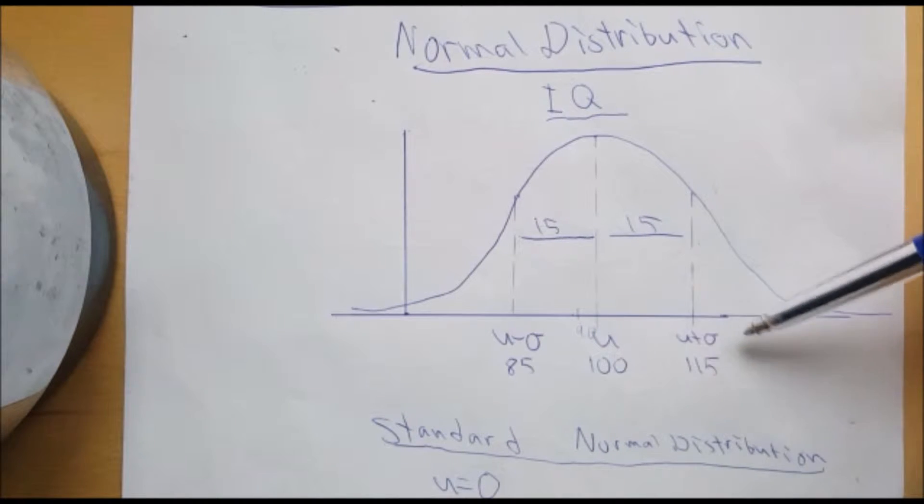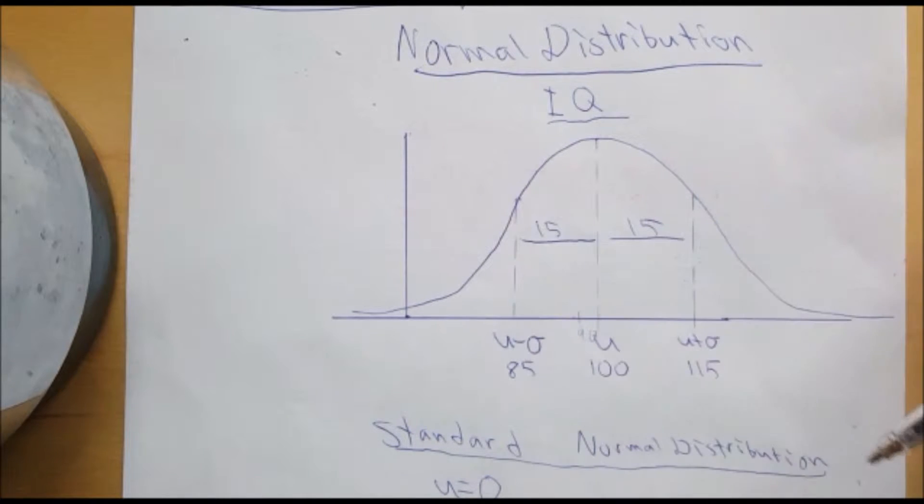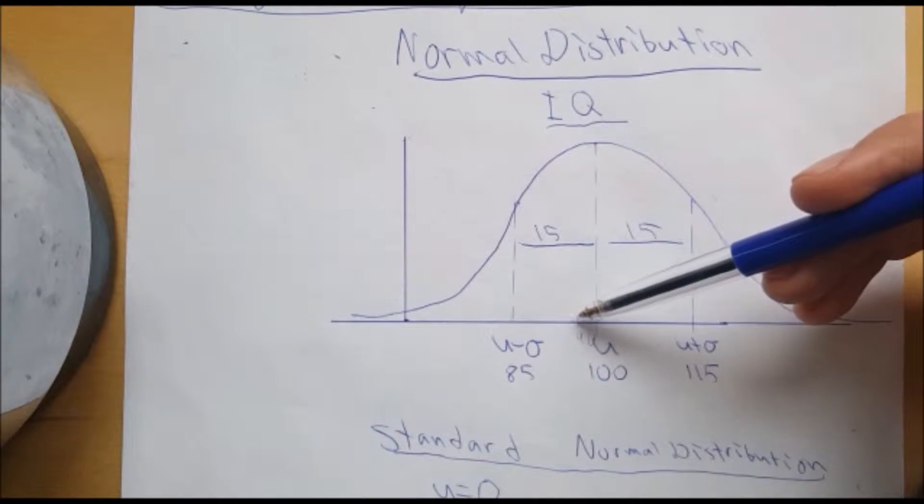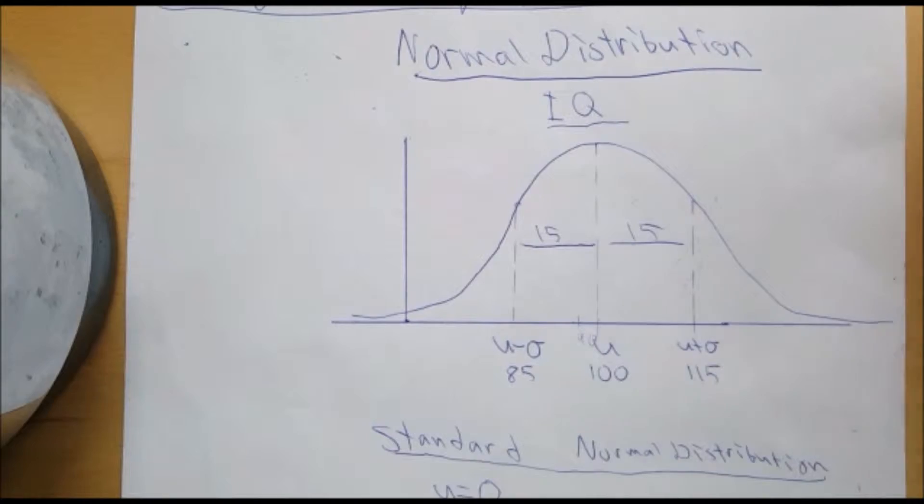The mean is 100 and standard deviation is 15. And if we want to find the probability that a person has an IQ of 90 or less, we can use our calculator to do that.